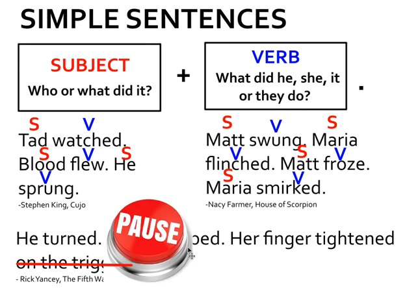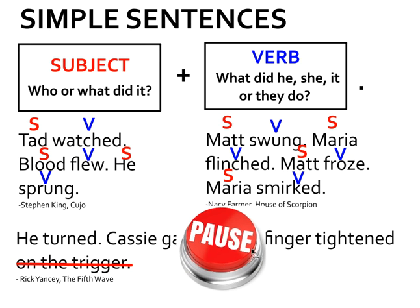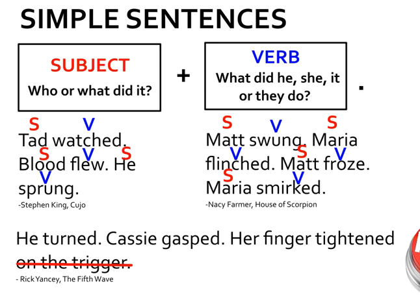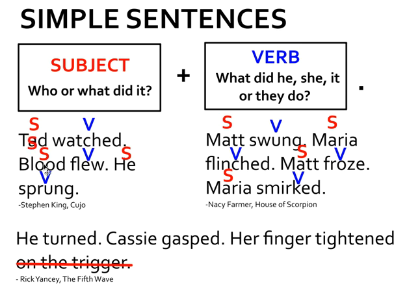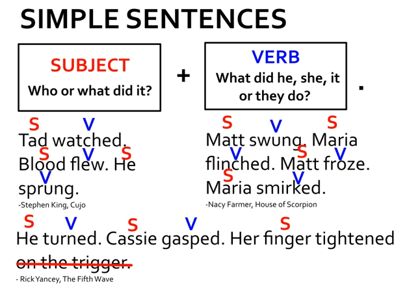Pause the video and try to identify the subject and the verb of each of these three sentences. You should have identified 'he' as the subject — he turned. 'Casey' as the subject — what is Casey doing? She gasped — I love that action verb. 'Her finger tightened' — what is doing the tightening? Not 'her' — 'finger' is. Finger tightened.